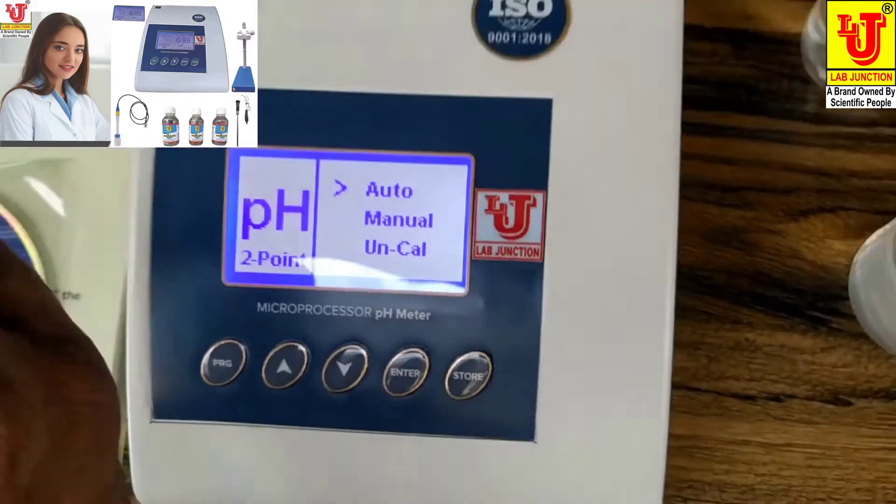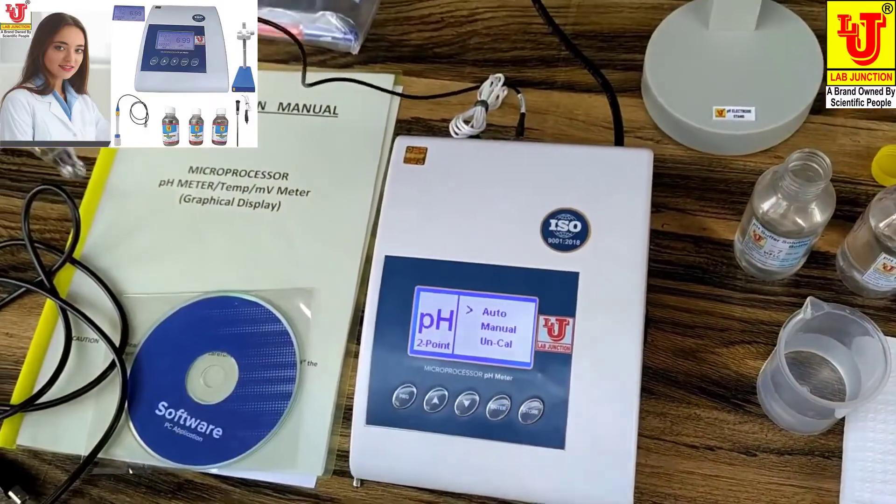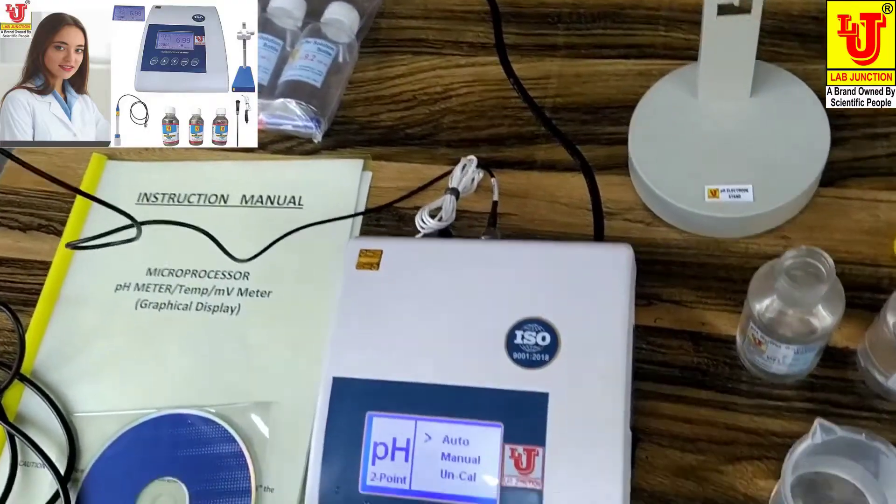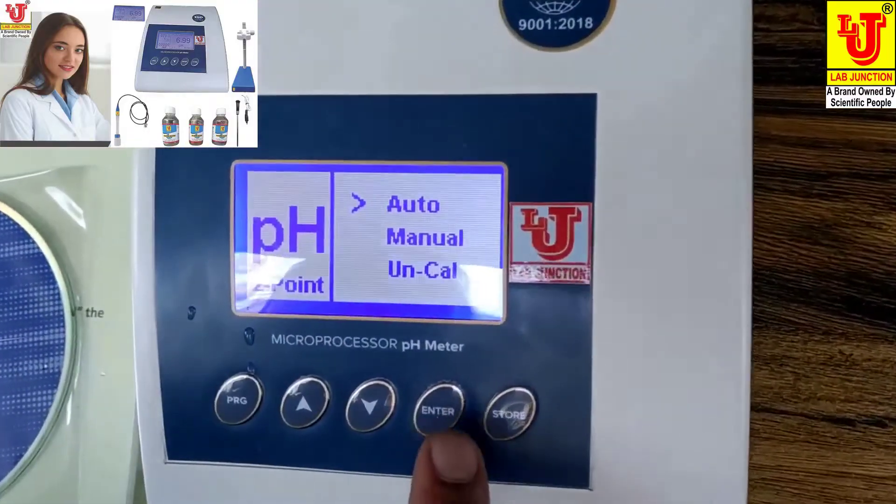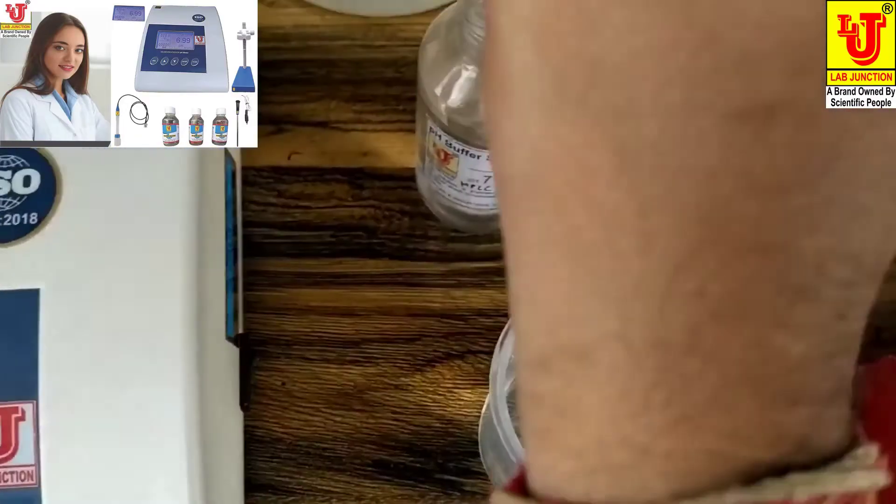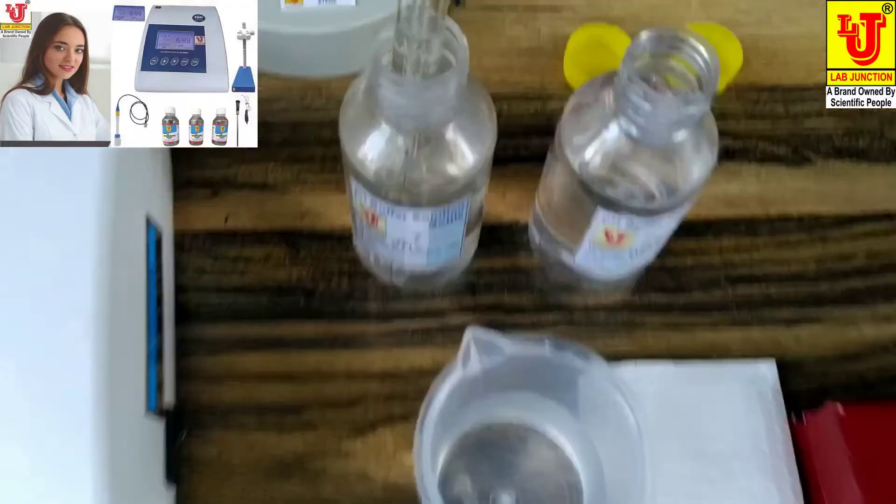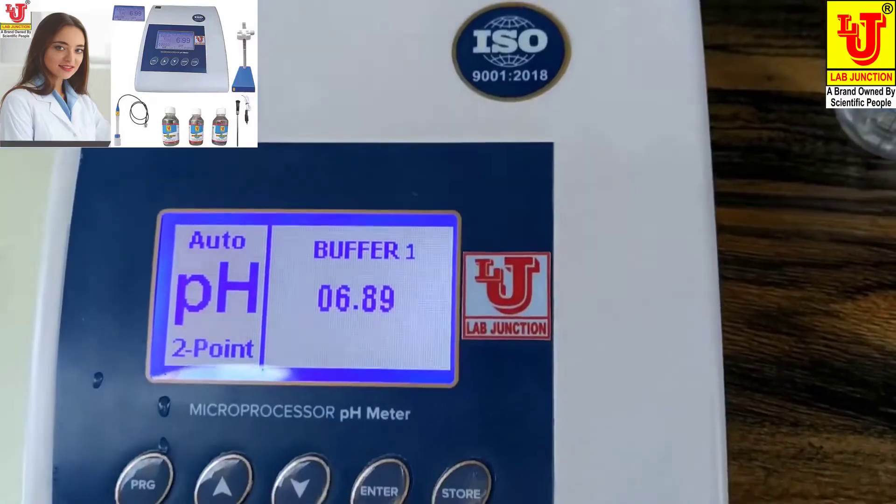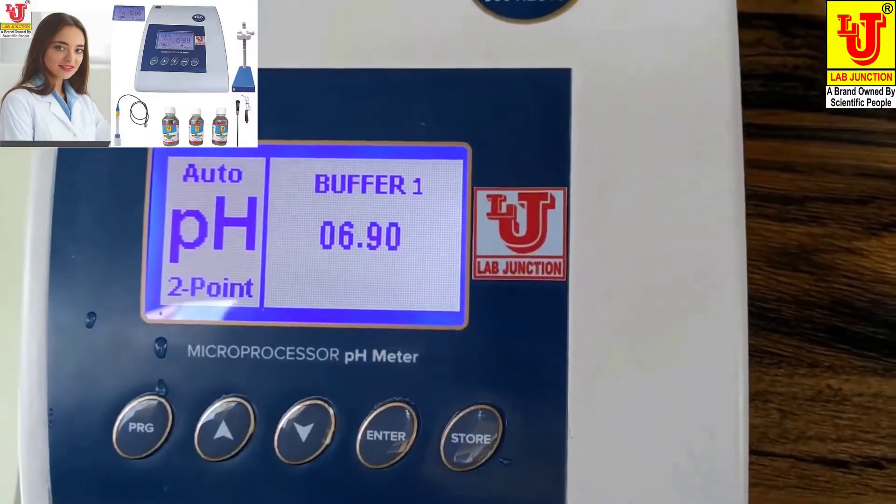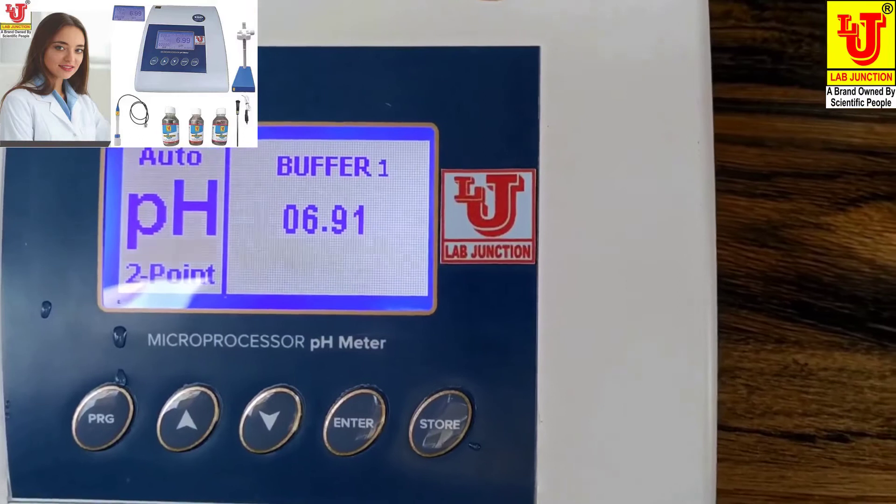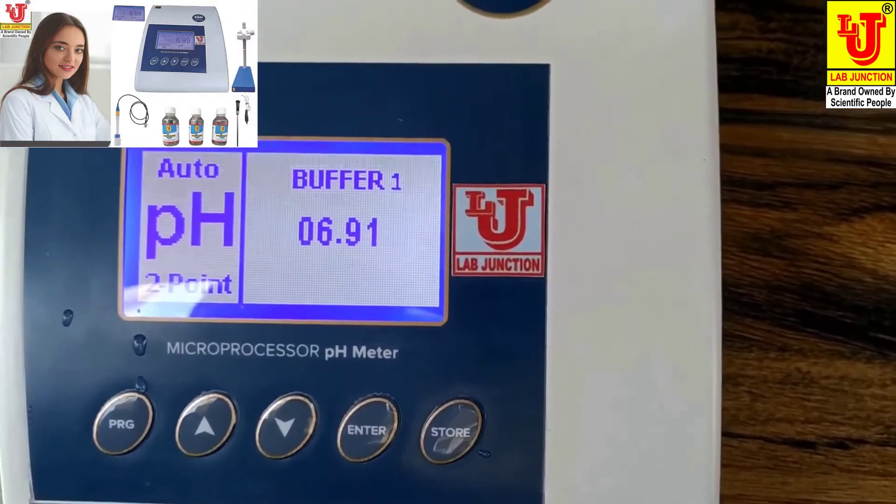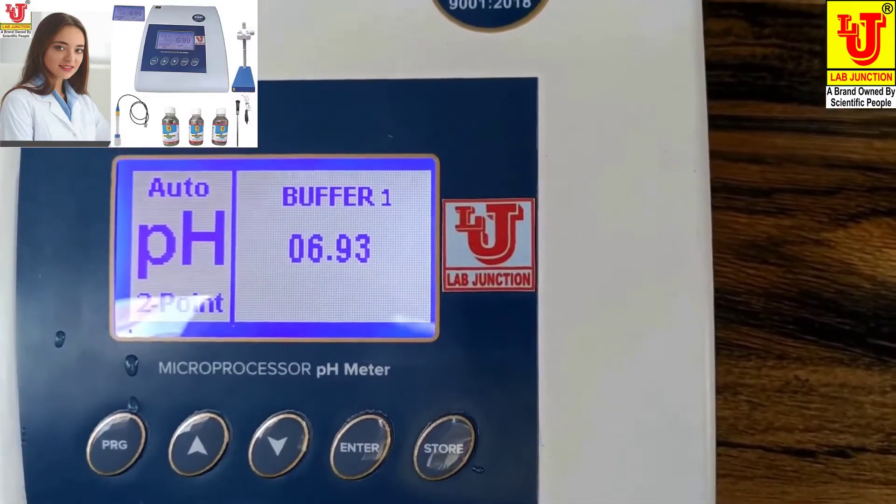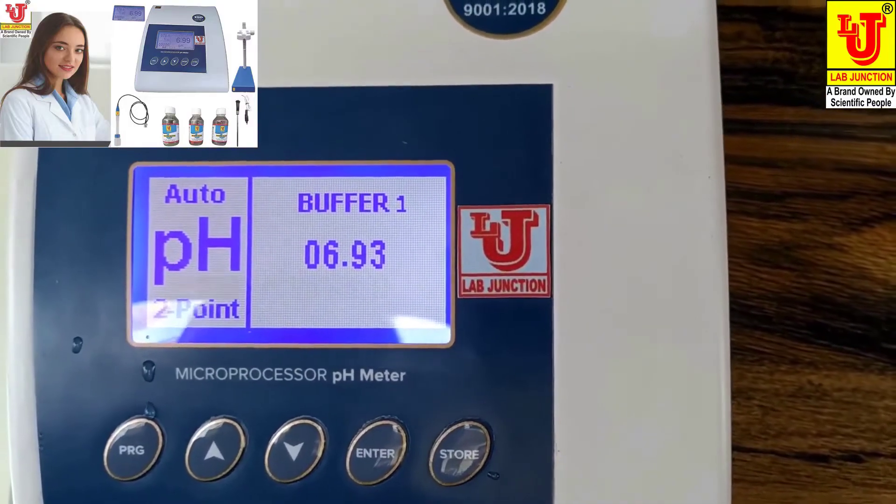This is your temperature pH electrode. If you want to calibrate on auto mode, you can dip the pH electrode to pH 7 buffer bottle and press enter. It can recognize automatically. Now give some time to achieve buffer solution at its final position.